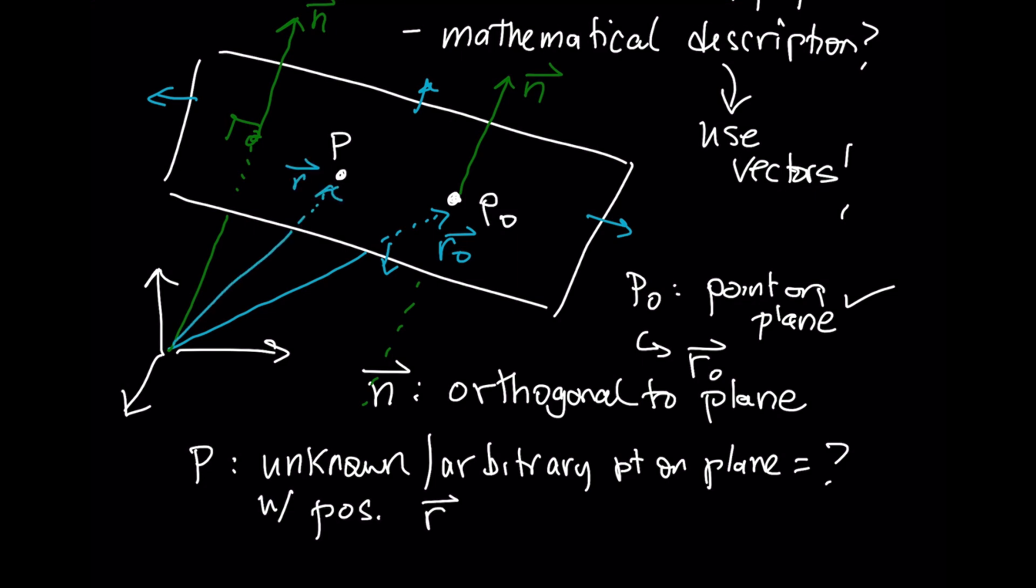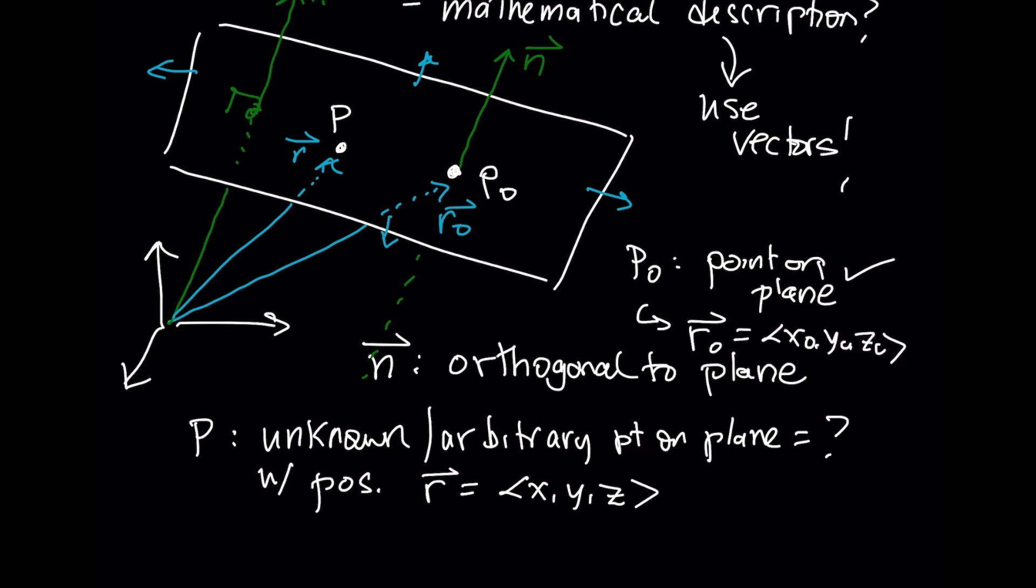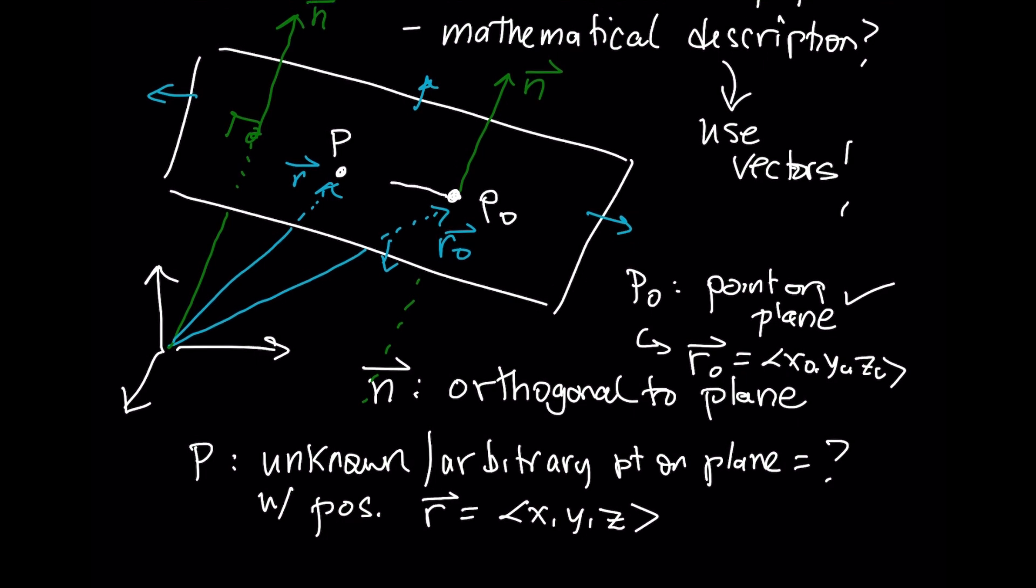I don't know what these components are, but I do know what these components are for the known point on the plane. There is a vector that connects the two points in the plane. This vector is going to be called V.